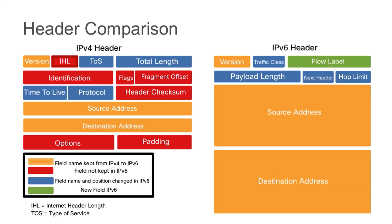There is one brand new field in IPv6: the flow label. This can be used to identify flows of traffic, which is useful in quality of service implementations. The big takeaway from this header comparison is that the IPv6 header has been simplified overall.